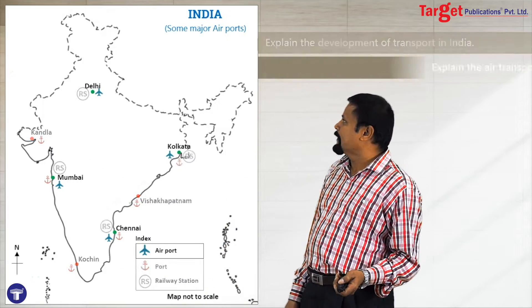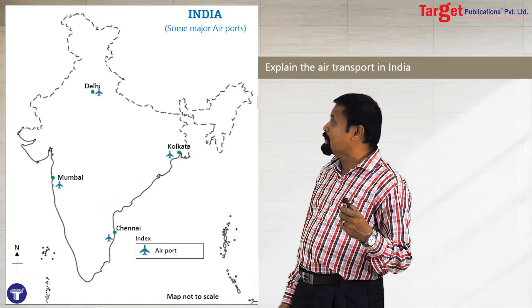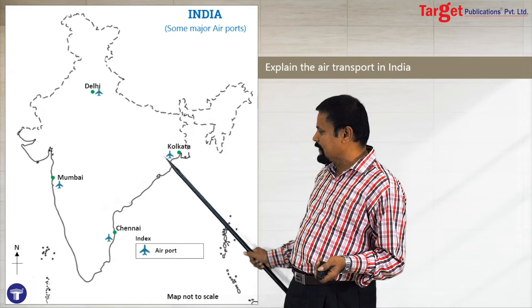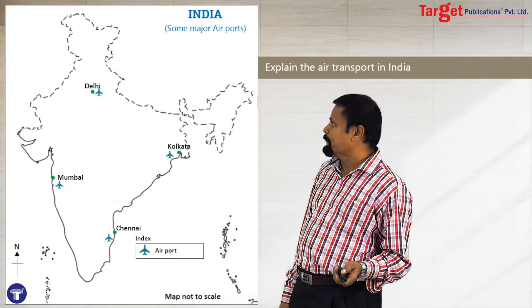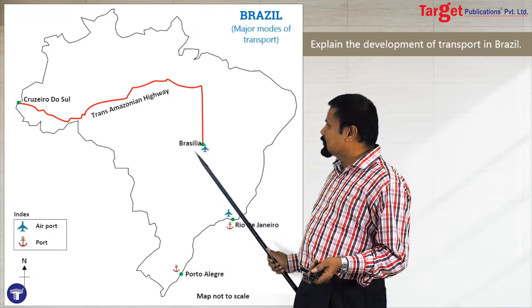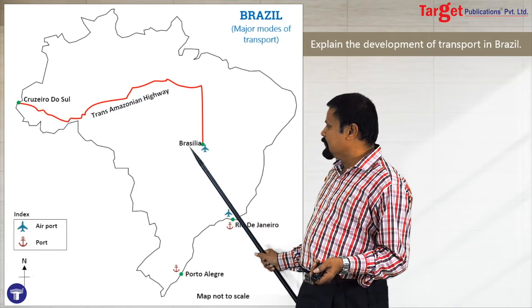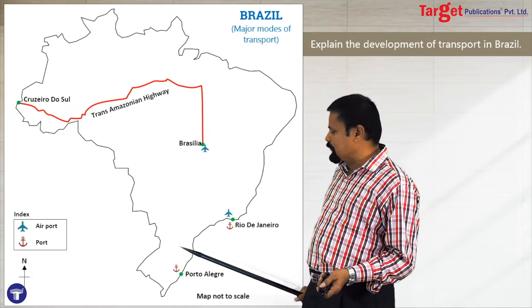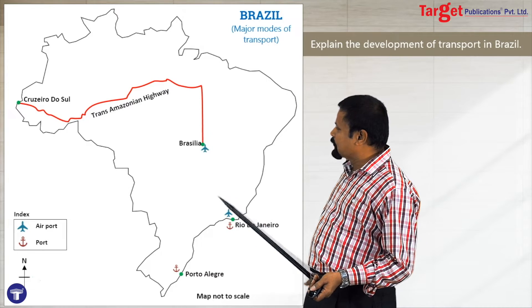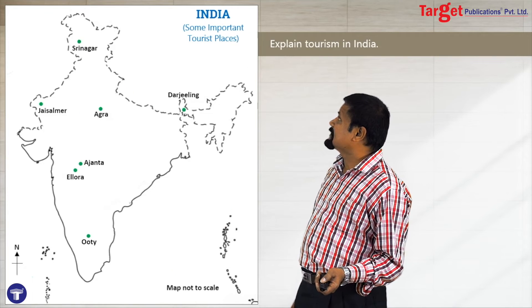For map questions, you should be able to mark major airports in India such as Delhi, Mumbai, Kolkata, or Chennai airports. The same way for transportation in Brazil, show the Trans-Amazonian Highway from Cruzeiro do Sul to Brasília, a few important ports, the Porto Alegre, Rio de Janeiro, and a few airports as well.